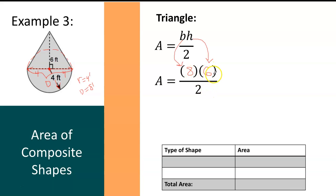So then we multiply 8 by 6. We get 48. And then 48 divided by 2 gives us an area of 24 square feet for the area of the triangle. So I'm going to go down to the bottom here and write the word triangle for the type of shape, and then I'm going to fill in the area, 24 square feet.